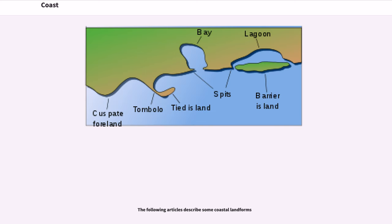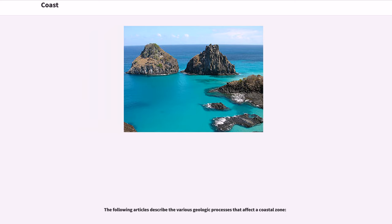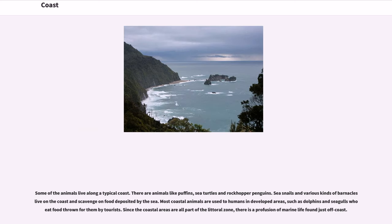The following articles describe some coastal landforms and the various geologic processes that affect a coastal zone. Some of the animals that live along a typical coast include puffins, sea turtles and rockhopper penguins. Sea snails and various kinds of barnacles live on the coast and scavenge on food deposited by the sea. Most coastal animals are used to humans in developed areas, such as dolphins and seagulls who eat food thrown for them by tourists.